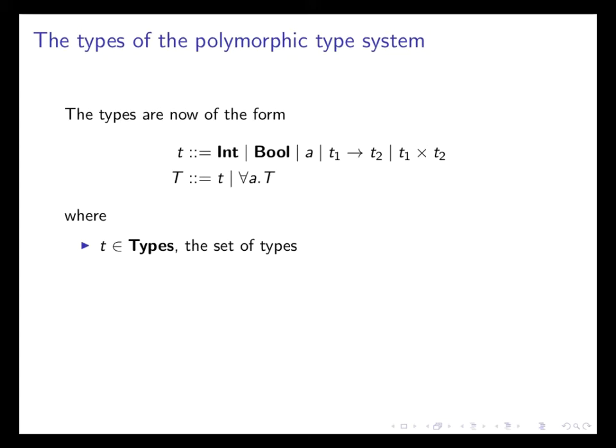We have all the types that we had in the simple type system. We have Int, Bool, we have Arrow types, we have Product types. But we have something new as well. We have type variables, and that's because we want to have universally quantified types, so called type schemes. And it's type schemes that allow us to express notions of parametric polymorphism.